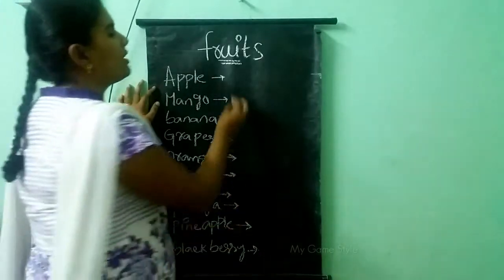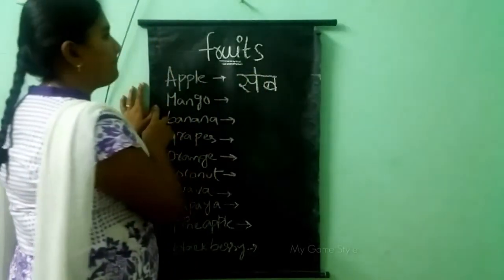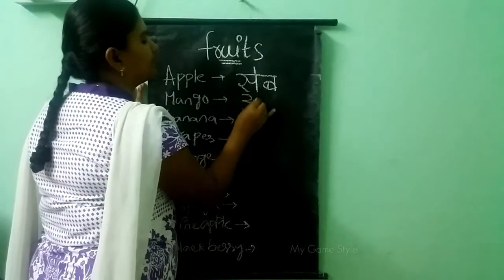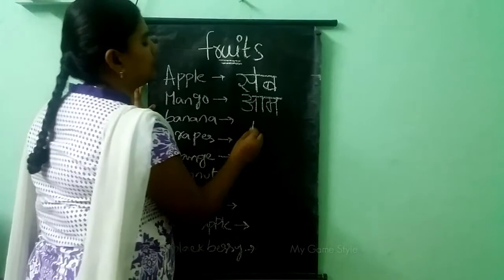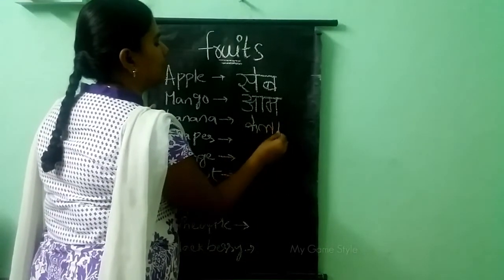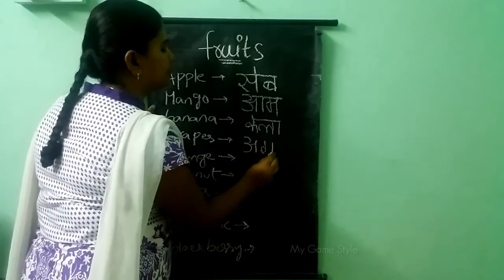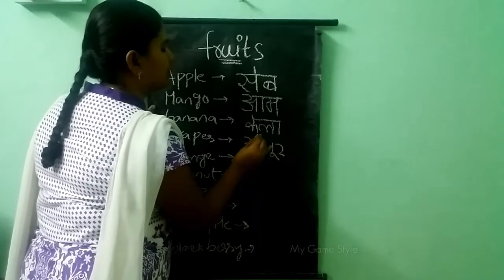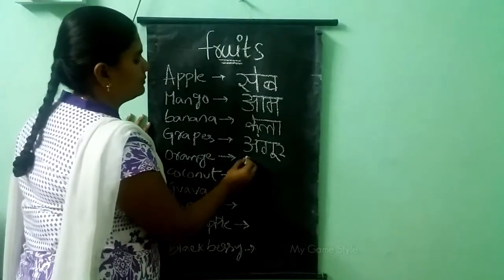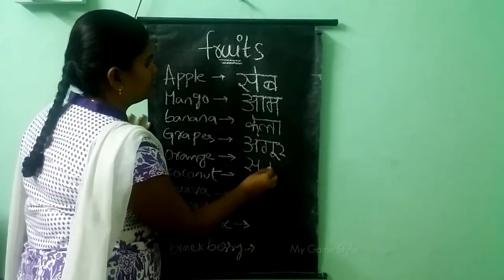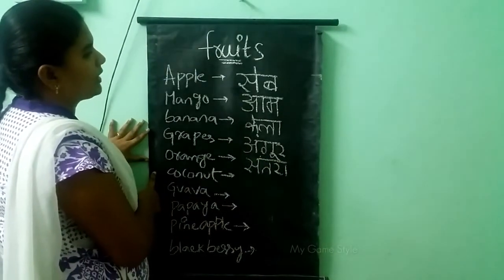Apple ko kahate hai, sieve. Mango, aam. Banana, kela. Grapes, anggur. Orange, santra. Coconut, nariyal.